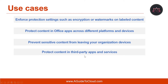Another use case is to protect content in third-party apps and services by using Microsoft Cloud App Security. With Cloud App Security, you can detect, classify, label, and protect content in third-party apps and services such as Salesforce, Box, or Dropbox — even if the third-party app or service does not read or support sensitivity labels.